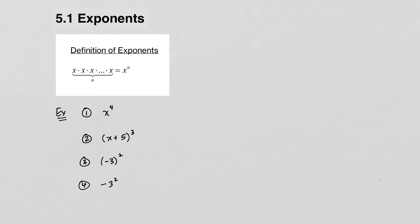Section 5.1 deals with exponents, and this is a topic that should be reviewed for most of you, but I am going to go through all the basics. So we'll start with the definition of exponents. If you have an expression like x times x times x times x a certain number of times — let's say we do this n times — we can write this as x to the n power, and that's actually how we say that: x to the n power, or sometimes just x to the n for short.